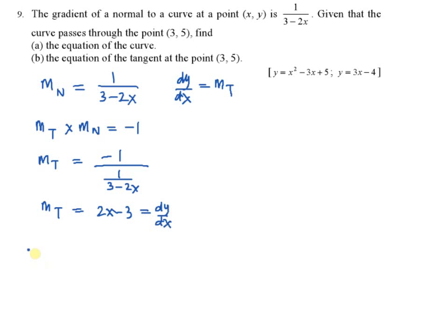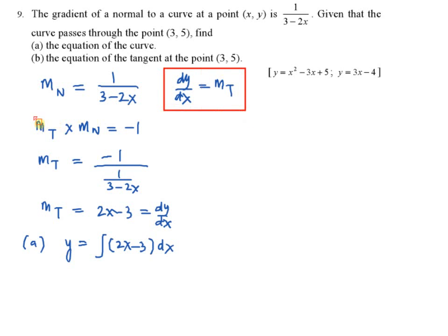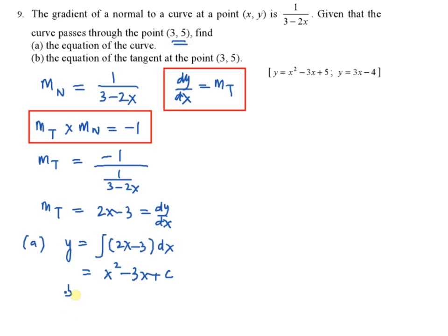Now you have dy/dx, so you can find the equation of the curve by integrating dy/dx. Remember, dy/dx is the gradient for the tangent, and gradient for tangent multiplied by gradient for normal equals negative 1. So integrating, you have 2x squared over 2, that is x squared minus 3x plus c. You have one point, 3, 5 — substitute into the equation: 5 equals 3 squared minus 3 times 3 plus c, giving c equal to 5. Therefore, the equation of the curve is y equal to x squared minus 3x plus 5.